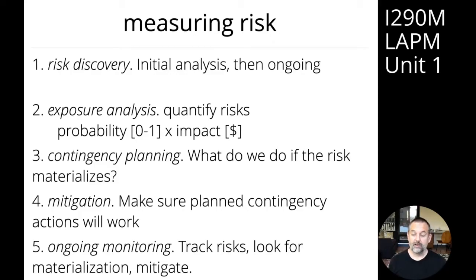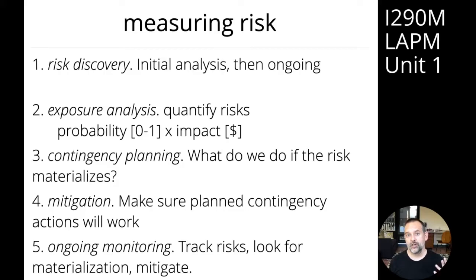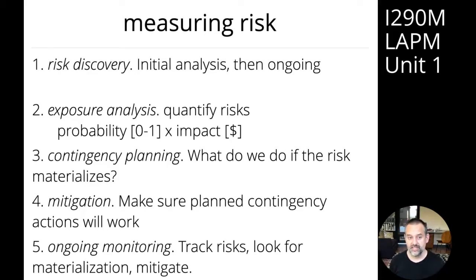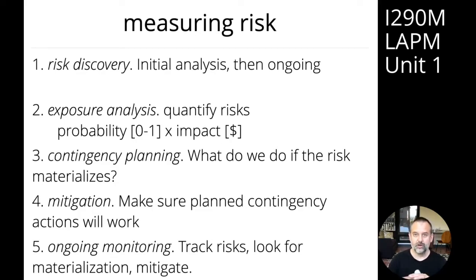Then we've got to think about what happens if the risks materialize — that's our contingency planning. Crucially, you want to make sure that you're not spending more money on the mitigation than the actual risk costs. This is another reason why it's important to quantify risks. If a particular risk is going to cost you half a million dollars, you shouldn't spend more than half a million dollars trying to mitigate it. It puts an upper bound on the amount of money you should spend on mitigation.